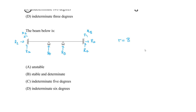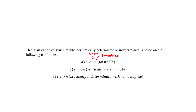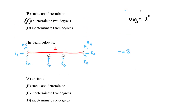Now let's find the number of equations. The key is determining how many members we have. This is a continuous beam — there are no hinges to separate or break it. So we have one single continuous member. For every member we get three equations, so the number of equations is 3 times 1, which equals 3.